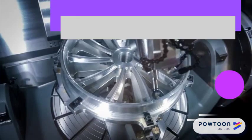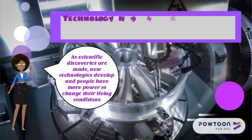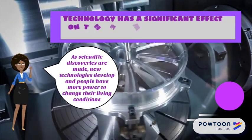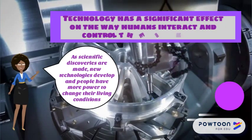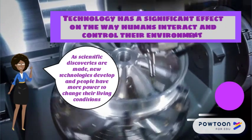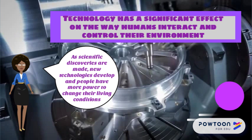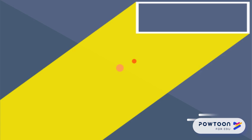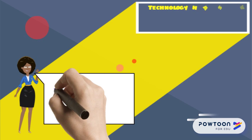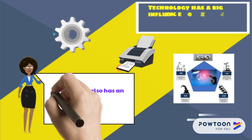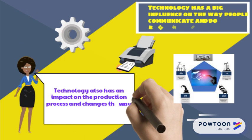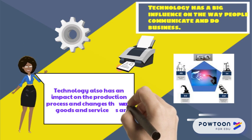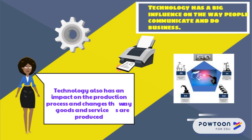Technology has a significant or important effect on the way humans interact and control their environment. As scientific discoveries are made, new technologies develop and people have more power to change their living conditions. Technology has a big influence on the way people communicate and do business, and also has an impact on the production process and changes the way goods and services are produced.